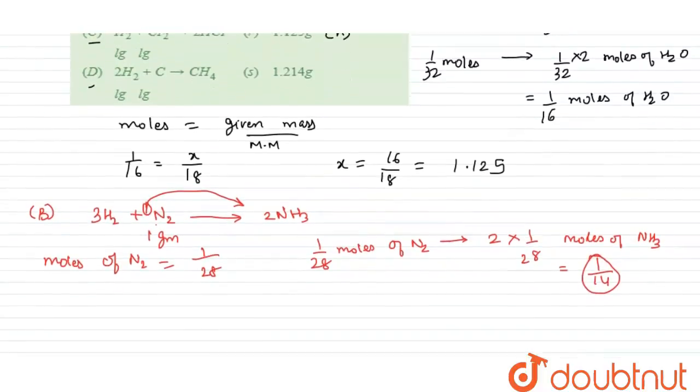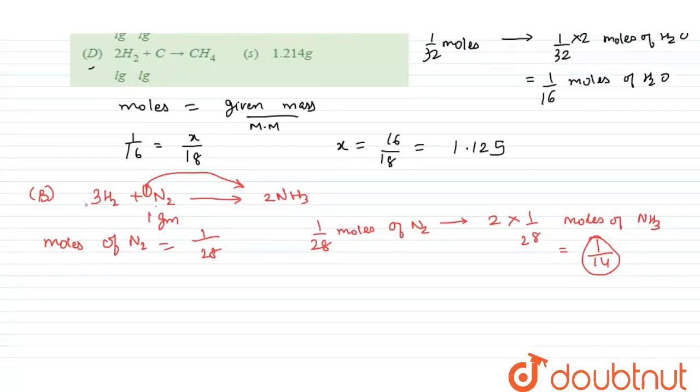Now we will use, now we need to find the mass of NH3. So the moles equals X grams upon molecular weight. Moles given are 1 by 14 which equals X upon molecular weight, which is 17. So the value of X comes out to be 14 upon 17, which equals 1.214 grams.